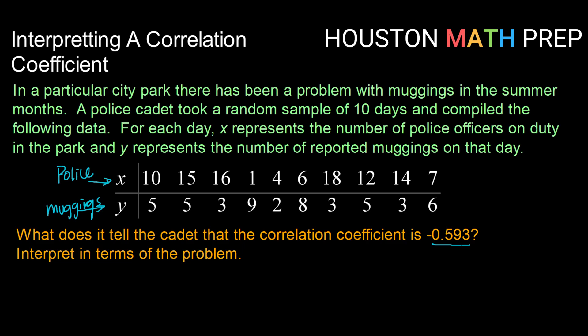Okay, so first let's just interpret that correlation coefficient. Remember that correlation coefficient goes from negative 1 to 1. 0 means no correlation. Negative 1 means a very strong negative correlation, and positive 1 is a very strong positive correlation.